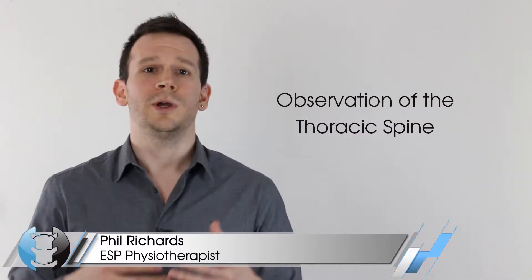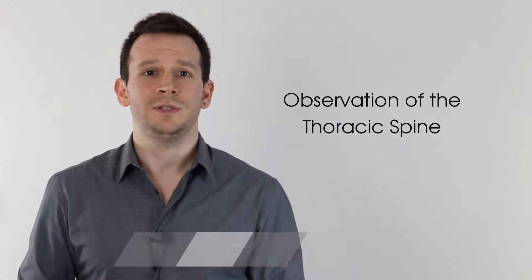Hey guys, welcome back to Clinical Physio with me Phil Richards. Today we're going to be talking about observation of the thoracic spine and we're going to break down our views into an anterior view, a lateral view, and a posterior view. We're going to be highlighting the key traits and pathologies in each of these views, such as osteoporosis or a rib dysfunction.